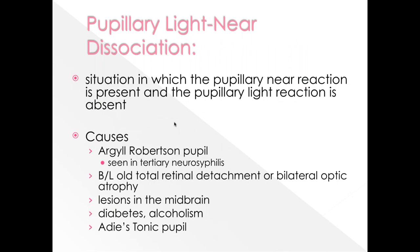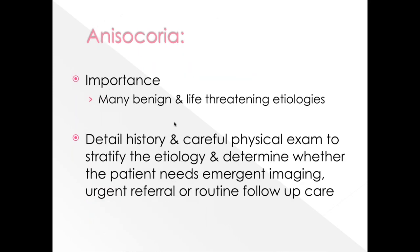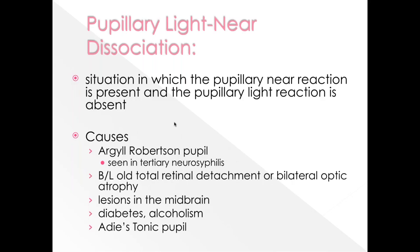Light-near dissociation is a situation in which the near pupillary reflex is present but the light reflex is absent. It is classically seen in the Argyll Robertson pupil of tertiary neurosyphilis, and can also be seen in bilateral old retinal detachment, bilateral optic atrophy, dorsal midbrain lesions, long-standing diabetes or chronic alcoholism, and the Adie tonic pupil.